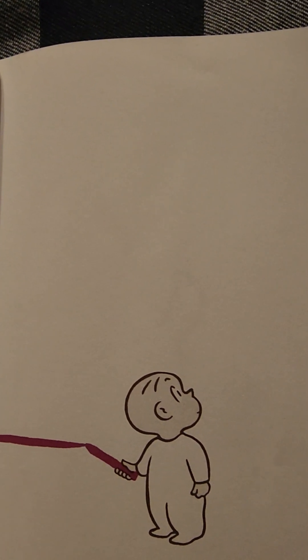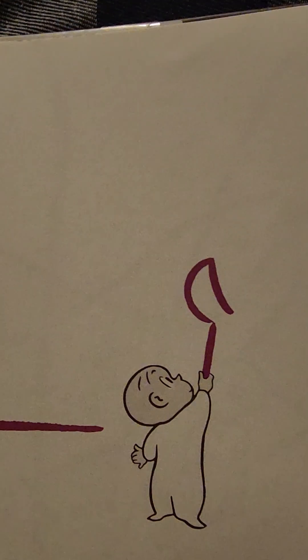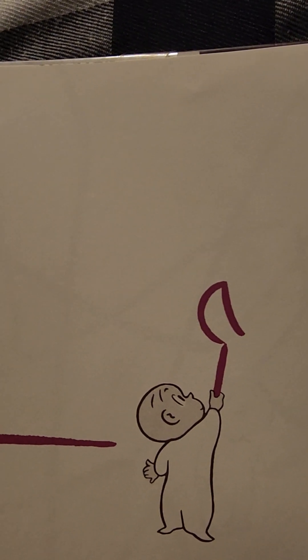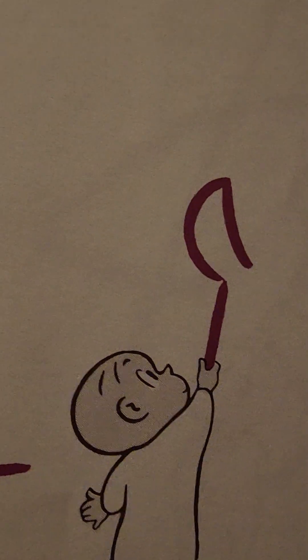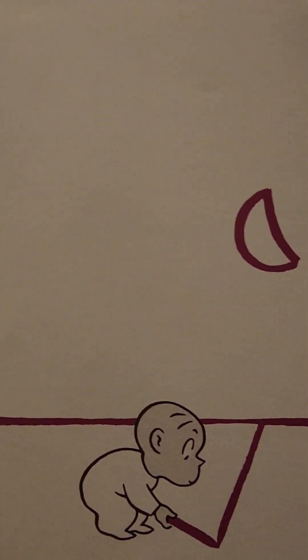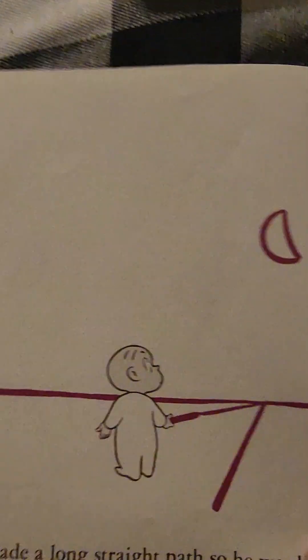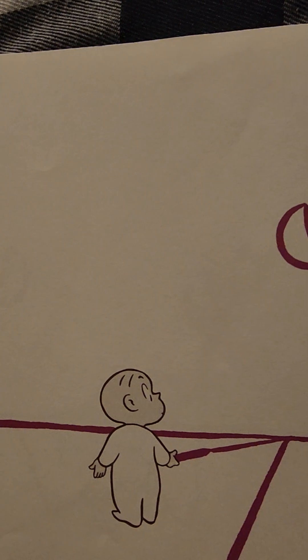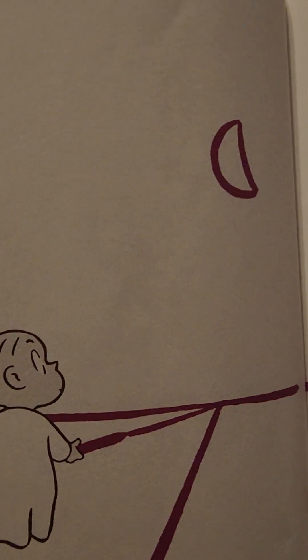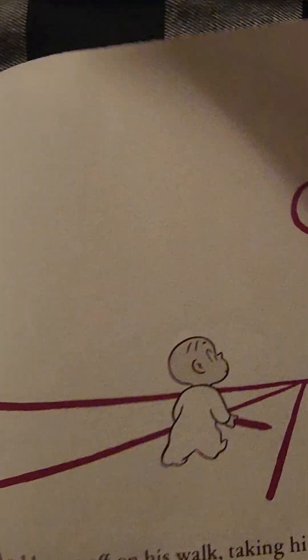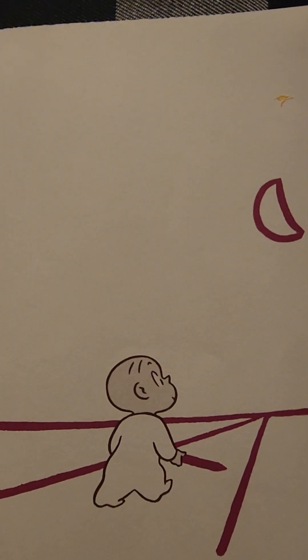One evening after thinking it over for some time, Harold decided to go for a walk in the moonlight. There wasn't any moon and Harold needed the moon to walk in the moonlight. Look at him drawing his own moon. He needed something to walk on, so he made a long straight path so he wouldn't get lost. Harold is so smart, and he set off on his walk taking his big purple crayon with him.